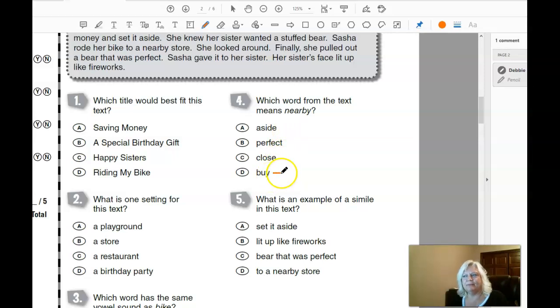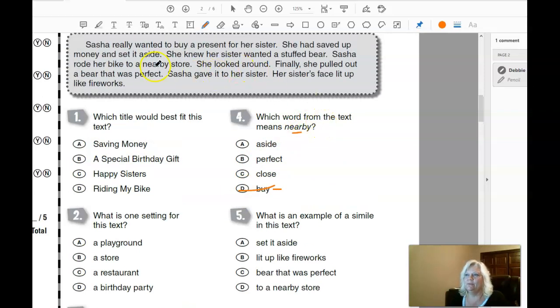This B-Y means to purchase something, so that is not it. I'm going to tell you it does not. Is it aside, perfect, close? The same word as nearby. If I go back up in here, there's the word, and we want to make sure that it makes sense in there.